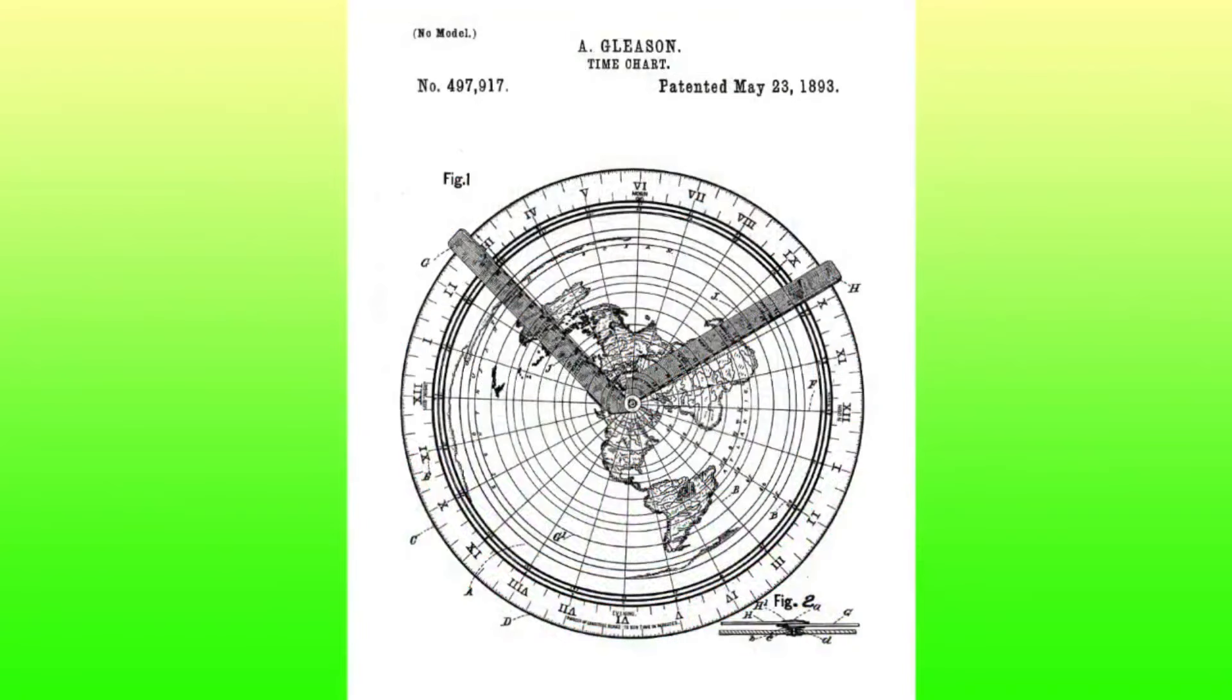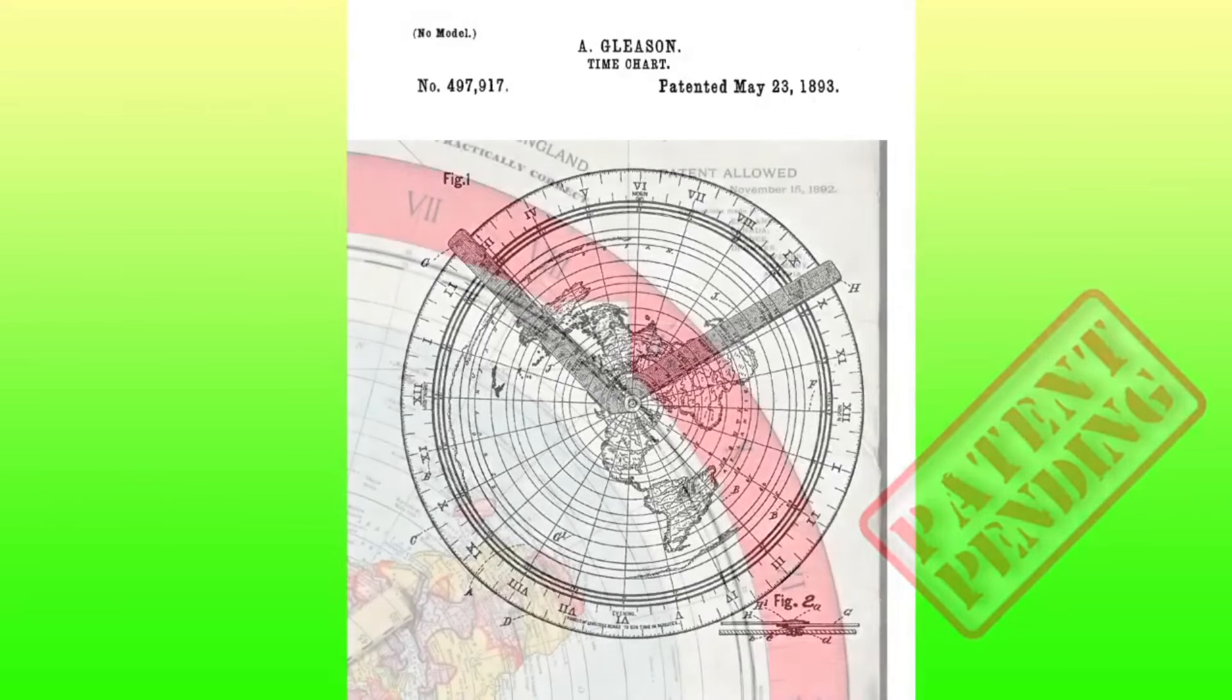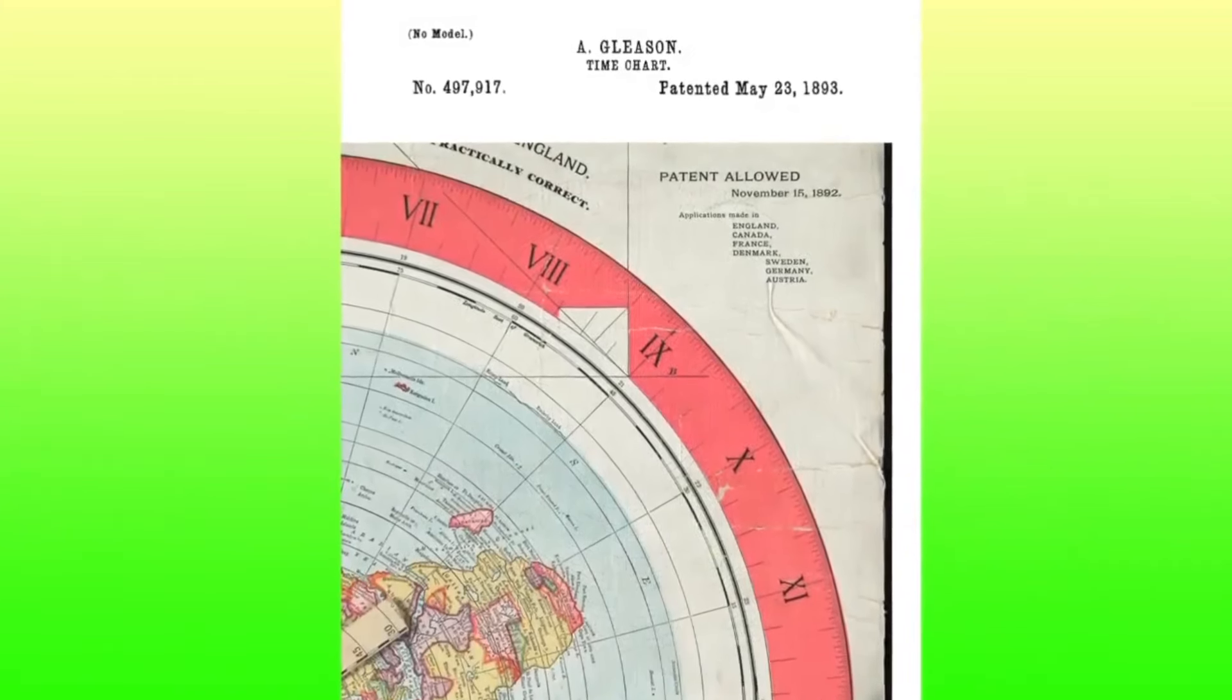When someone files a patent application, the date that it's filed is recorded to avoid people stealing an idea while an application is processed or pending. As such, the date that a patent is filed and the date that it's finally allowed to stand are usually some time apart.